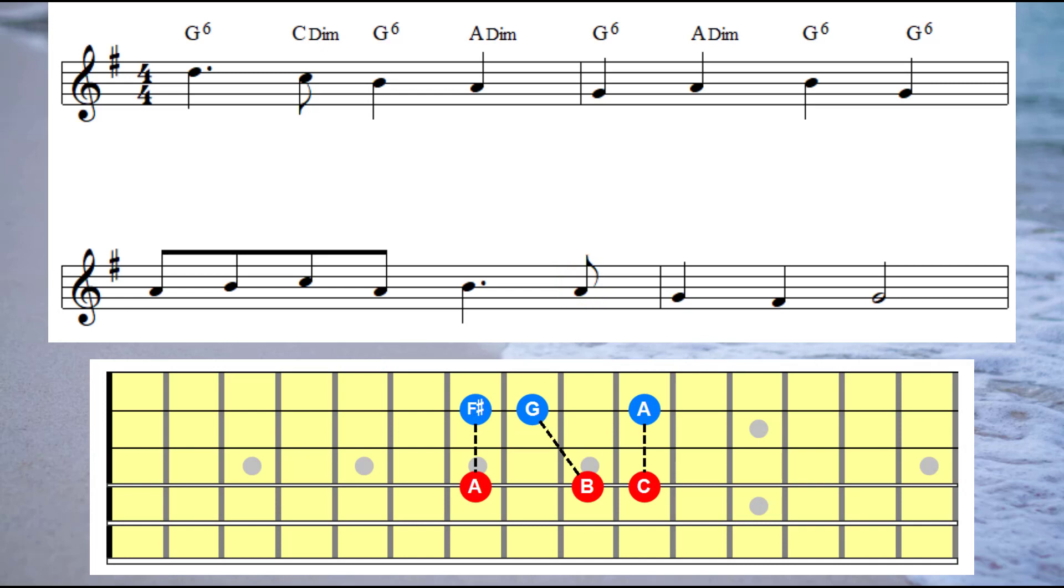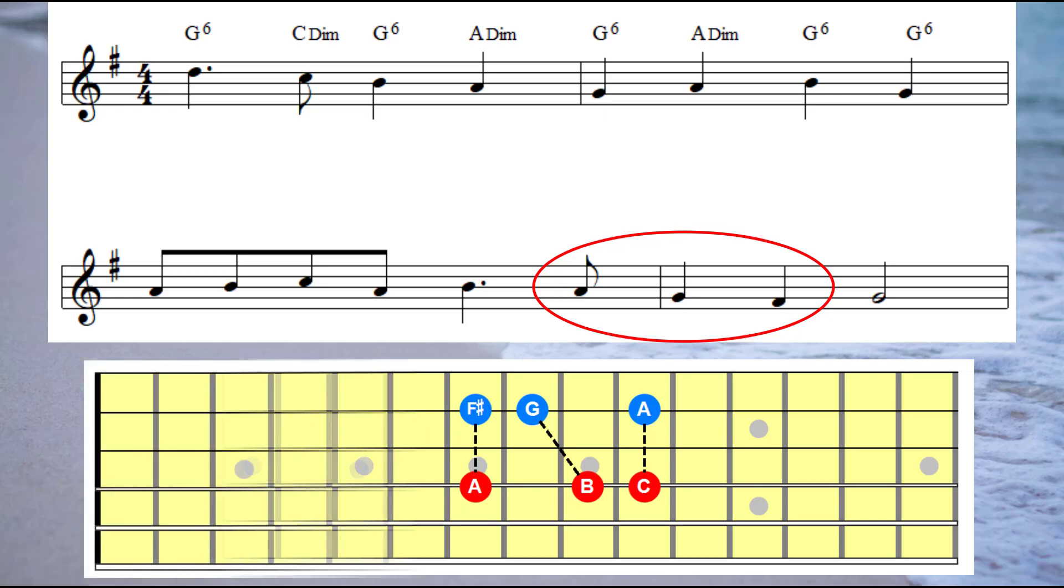What I'm going to do there on that A note—the last note in the third bar—I'm going to switch intervals. I'm going to change to an interval of a sixth and play that on the A note. Then I'm going to continue using the interval of a sixth in the next bar on the G and the F sharp. Then when I get to the G, I'm going to use an interval of a fourth.